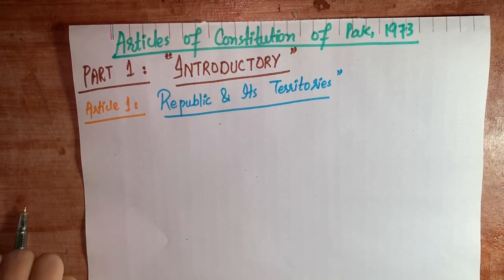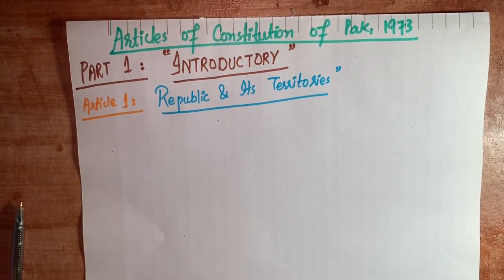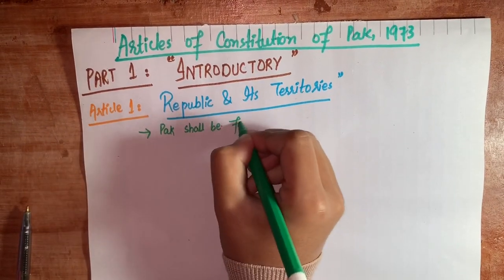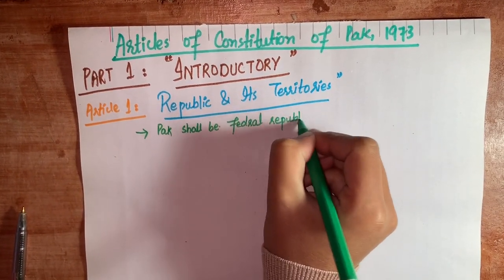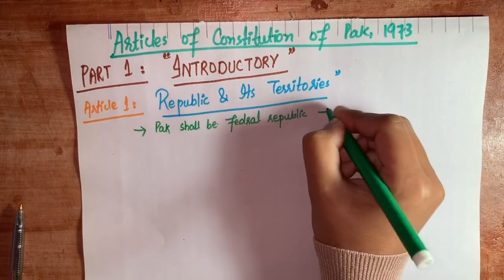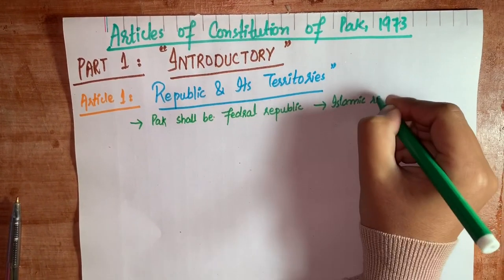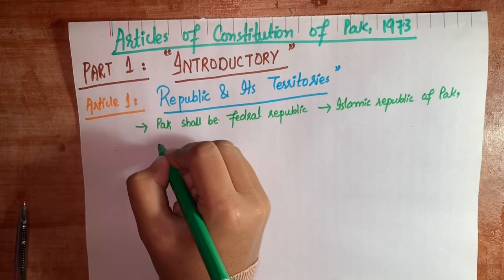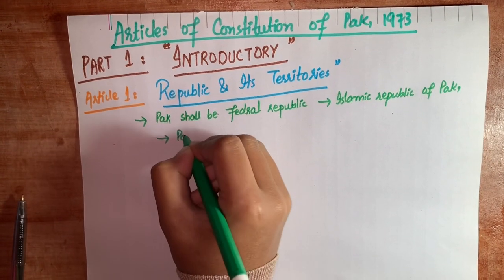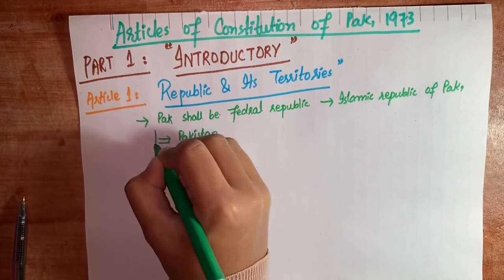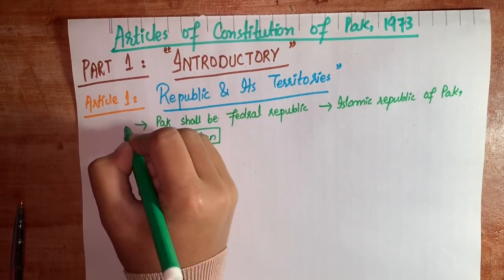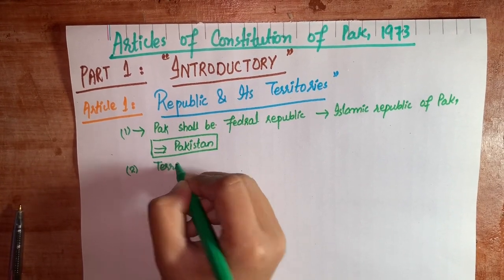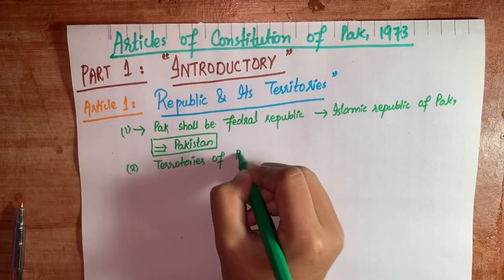Article 1, Clause 1 says: Pakistan shall be a federal republic to be known as the Islamic Republic of Pakistan, hereinafter referred to as Pakistan. Yeh kehta hai keh Pakistan ek federal republic hoga jis ka naam Islami Jumhuriya Pakistan hoga, aur baad mein ise Pakistan kaha jayega.